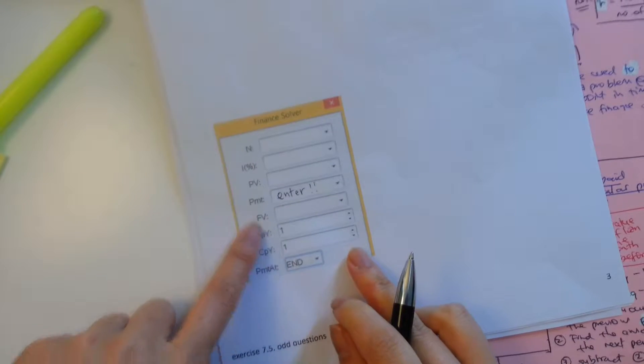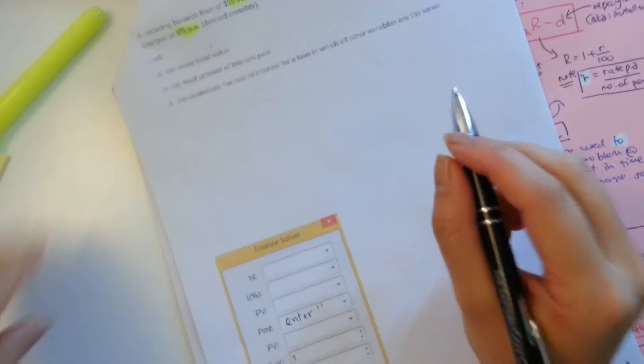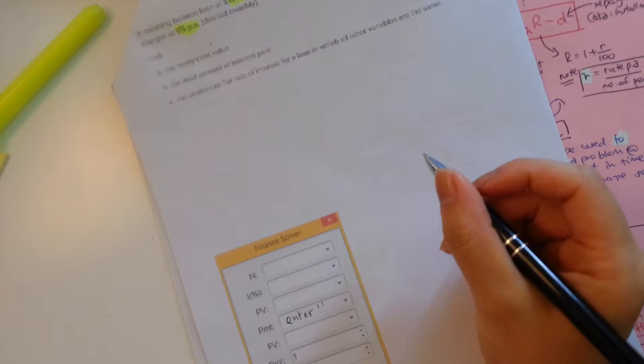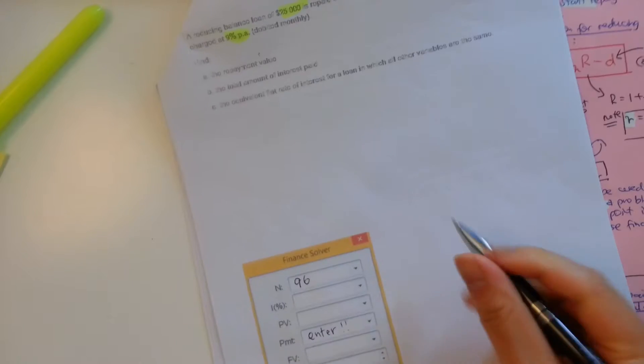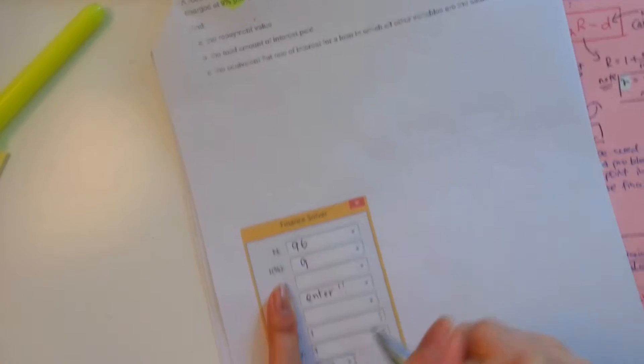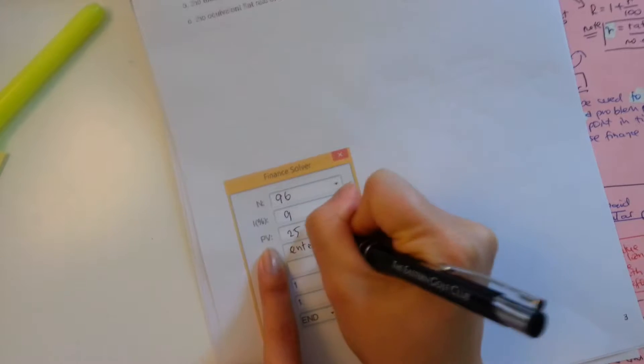So the N, it says eight years with monthly installments, so eight twelves, which is 96. Okay, eight years monthly. Interest rate is 9%. So this is what you'll be entering in your cash calculator. Present value is $25,000.